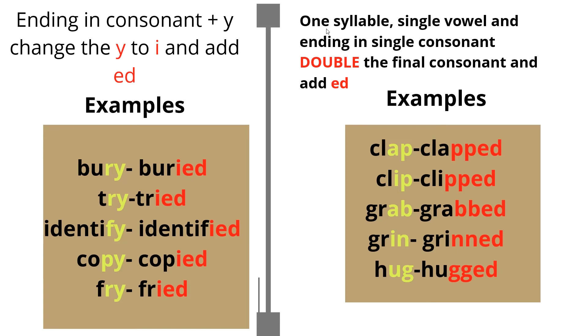Words with one syllable, a single vowel, and ending in single consonant, we double the final consonant and add ED. Clap, that's one syllable. There is a single vowel here, which is A, and it ends with a single consonant. So we're going to double the consonant, which is P, and add ED. Clap, clapped. Clip, clipped. Grab, grabbed. Grin, grinned. Hug, hugged.